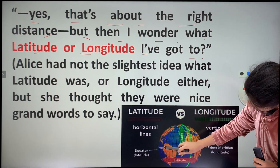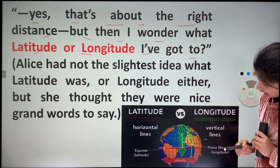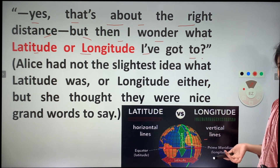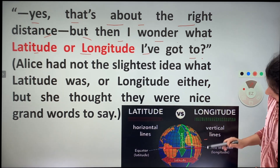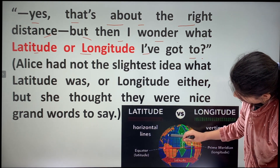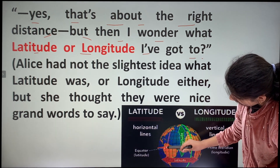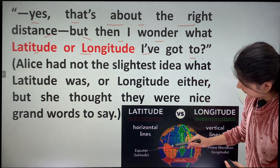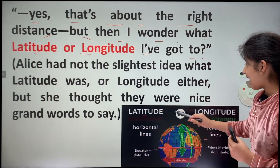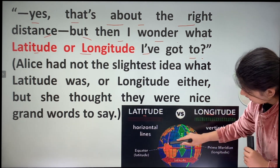For example, if I want to mark this position, what will I do? I don't know where it is. I will guess this is the longitude, this is the latitude, and then I will be able to mark this position. So that's why latitude and longitude is used.